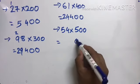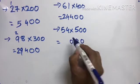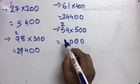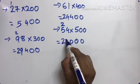54 times 500. Two zeros. 5 times 4 is 20, carry 2. 5 times 5 is 25 plus 2 is 27. 27,000.